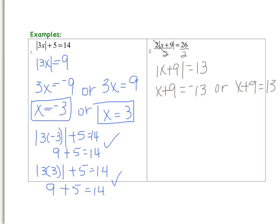On the left equation, I would subtract 9 from each side so that x is equal to negative 22. And on the other equation, I would also subtract 9 from each side and I would have x is equal to 4. So I am saying my answer could be negative 22 or positive 4.